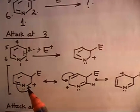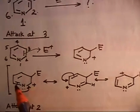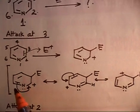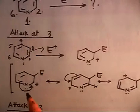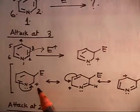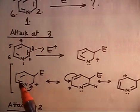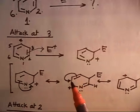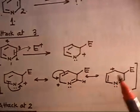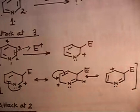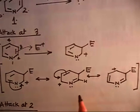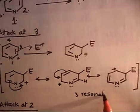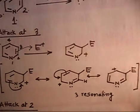You can flow the arrow from the top or from the bottom — both are the same thing. There is a positive charge adjacent to the double bond. We've already discussed the conditions for writing resonance: a lone pair or pi bond adjacent to the positive charge. So this flows here, giving a positive charge here; then this flows here, giving a double bond here and a positive charge here. So there are 3 resonating structures for attack at position 3.